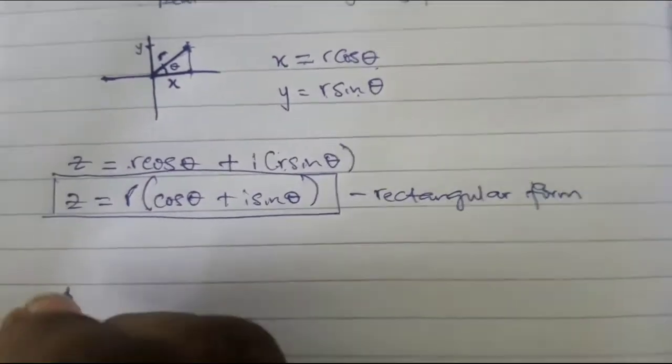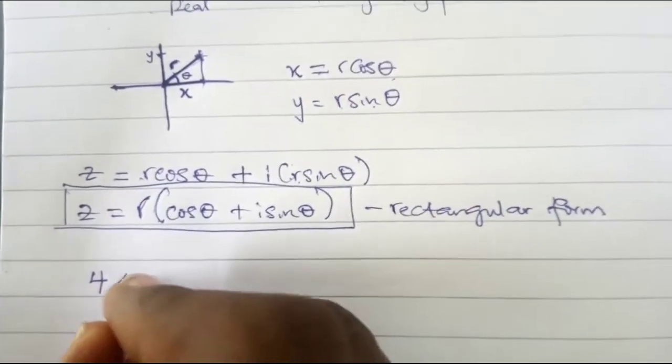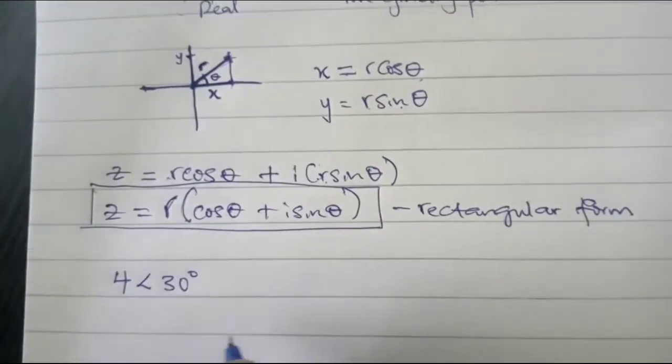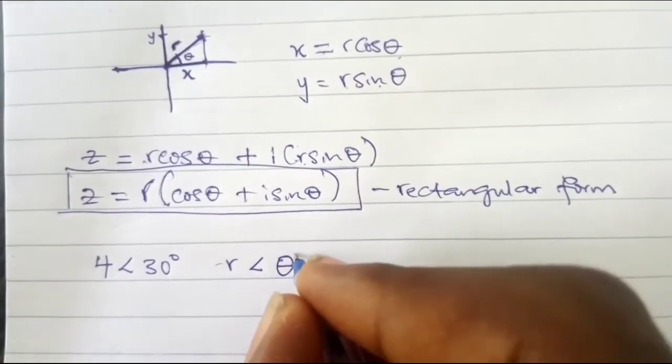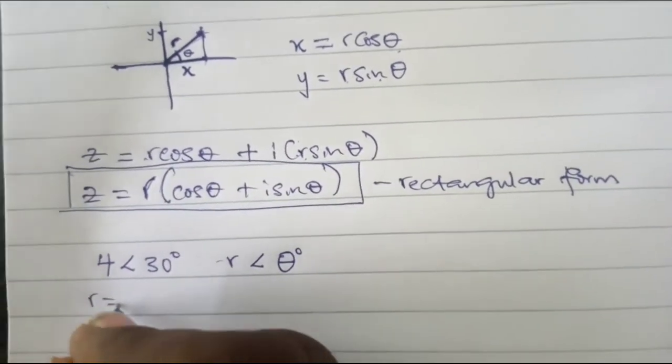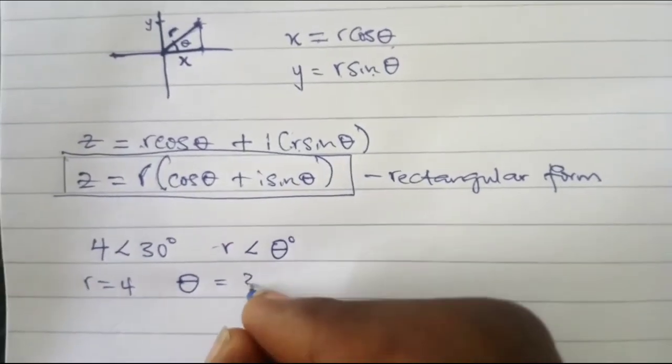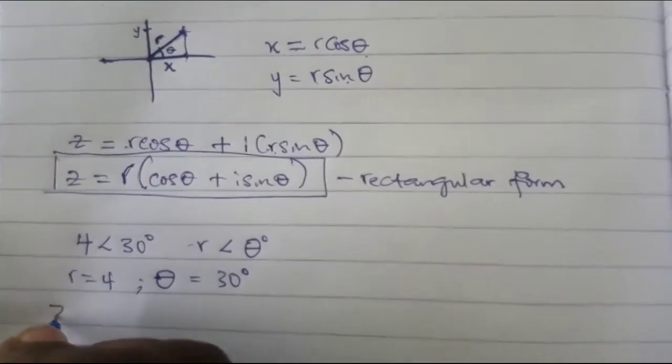So going back to the question, we have 4 angle 30 degrees. Now from looking at this, comparing with our polar formula we have r angle theta degrees. It means our r is equal to 4 and then theta is equal to 30 degrees.